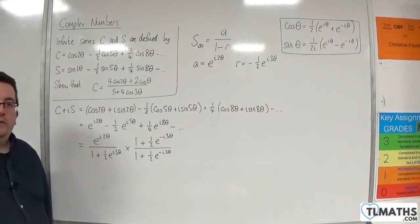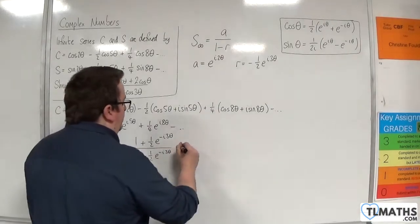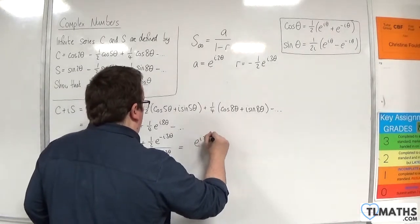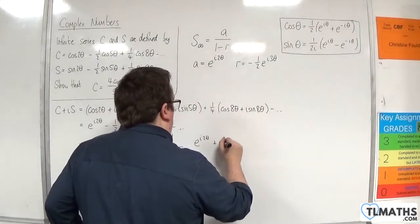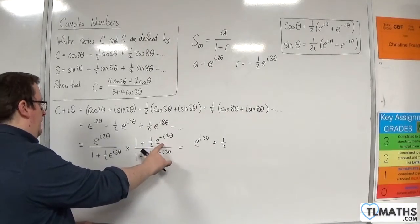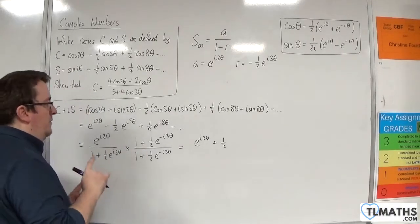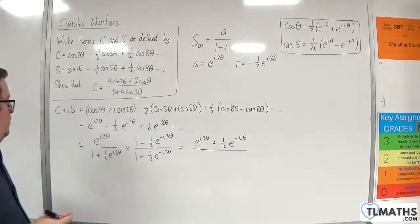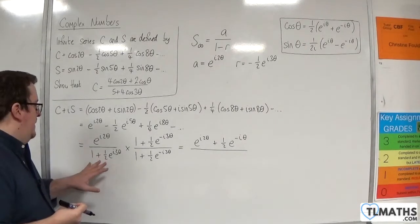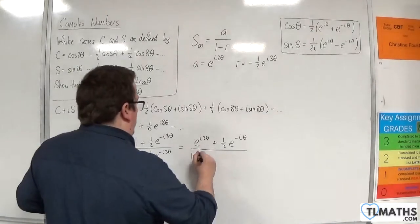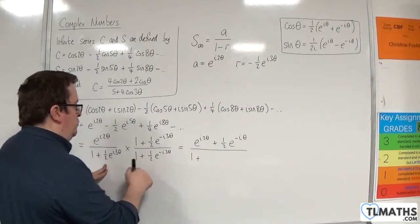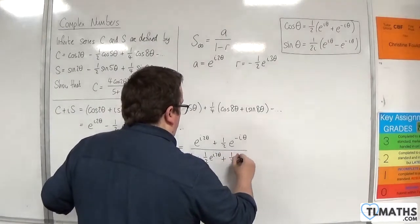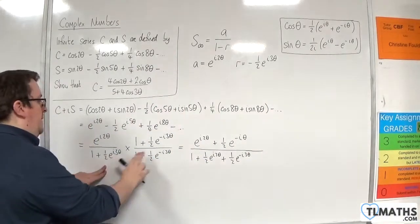I could have multiplied top and bottom by 2 first, but I'll work with the fractions. I need to expand the numerator and expand the denominator. The numerator: we're just going to get e^(i2θ), and then plus one-half e^(i2θ) times this, so e^(−iθ). In the denominator, I'm going to have 1 times 1, then plus one-half e^(i3θ) times 1, and then one times one-half e^(−i3θ).